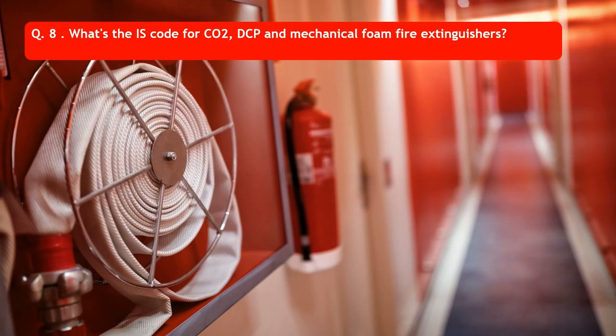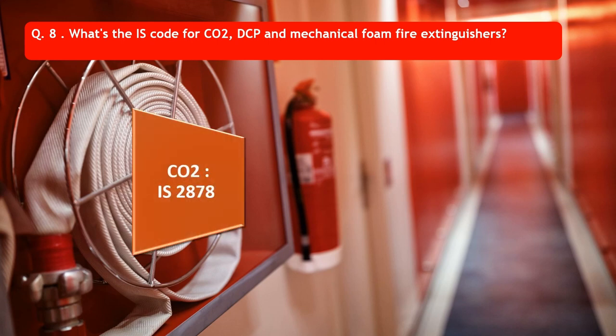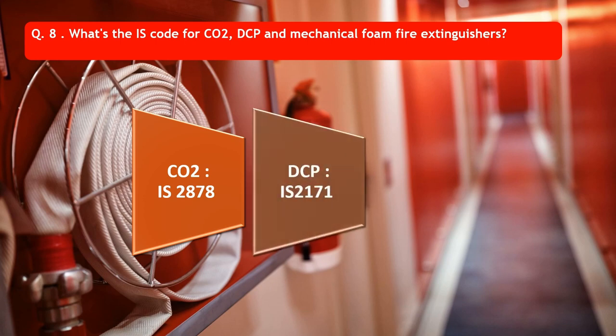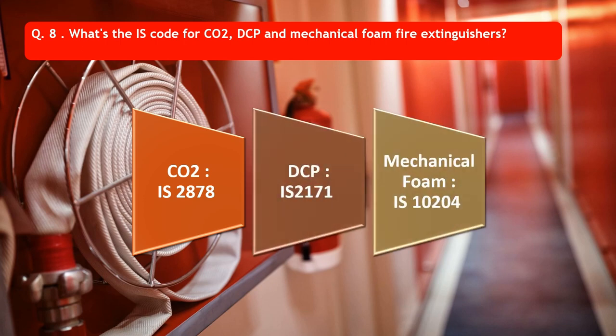Question number 8: What is the IS code for CO2, DCP, and mechanical foam fire extinguishers? For CO2 extinguishers, IS 2878. For DCP fire extinguishers, IS 2171. For mechanical foam, IS 10204.